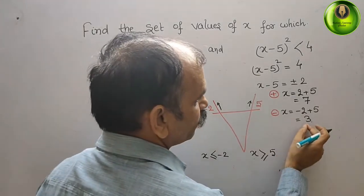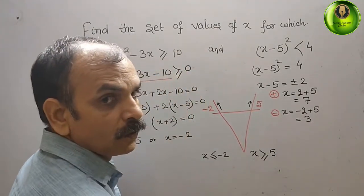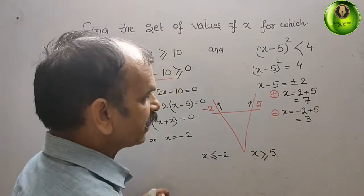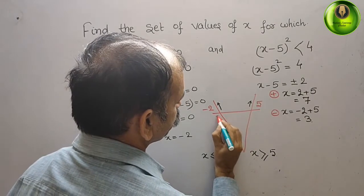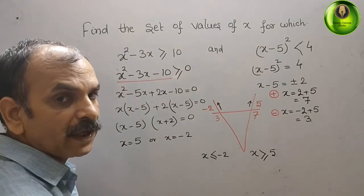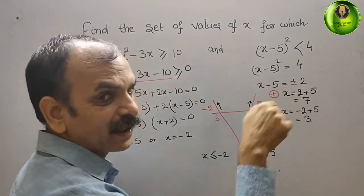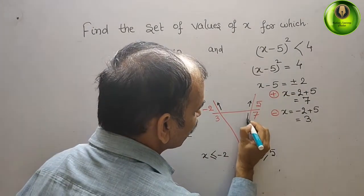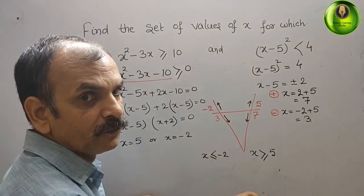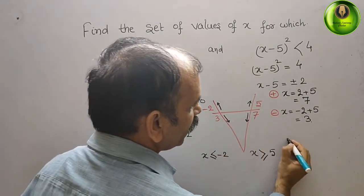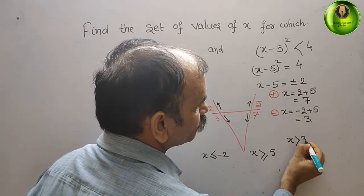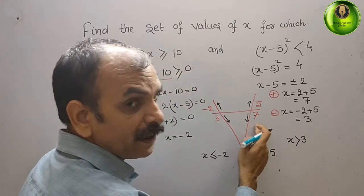Now for the second inequality, on the number line 3 is on the left and 7 is on the right. Since the sign is less than, we move toward the inner/negative side — that means x should be greater than 3 and x should be less than 7.